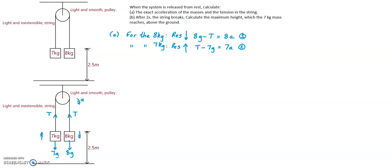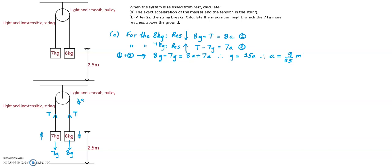So adding equation 1 and equation 2: 8g minus 7g equals 8a plus 7a. Therefore g equals 15a. Therefore the exact acceleration of the system will be g over 15 meters per second squared.